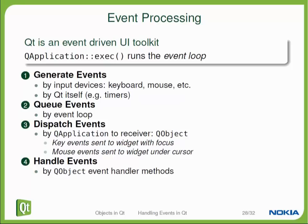If you think back at the existing Qt source code that we have already discussed, there was always the call to app.exec at the end of main. This is effectively what starts the event loop, and this call returns when the event loop has ended. So all the applications we have written so far have an event loop and were event-driven, even if we didn't know about it.